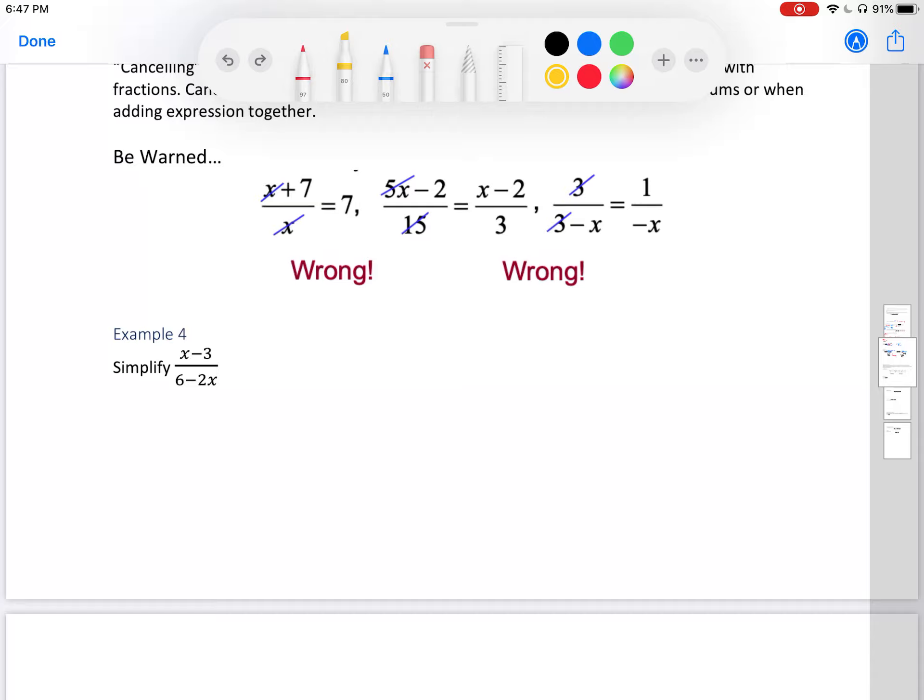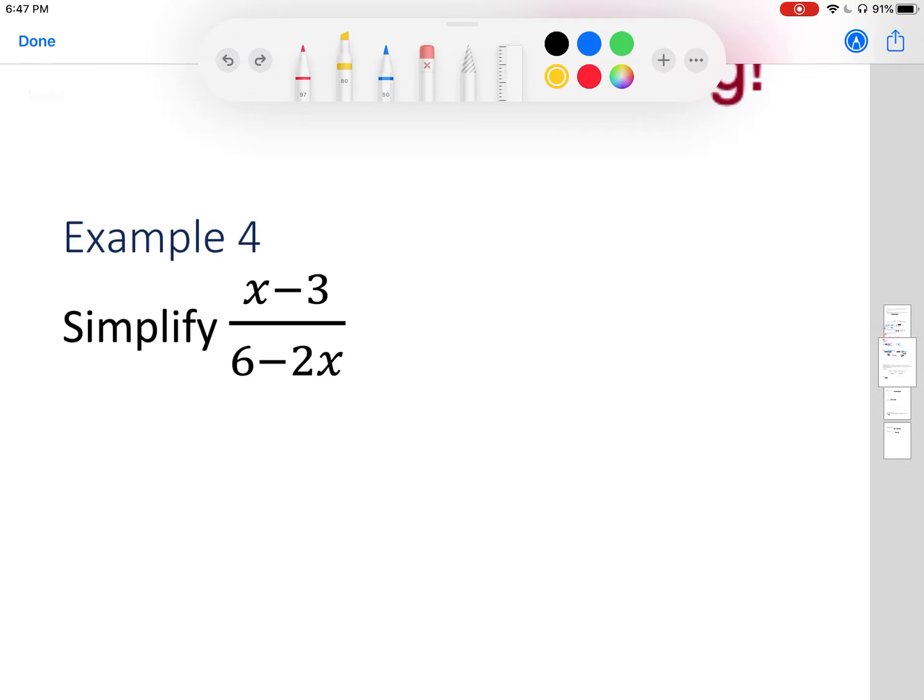So take a look here. We're asked to simplify x minus 3 and 6 minus 2x. Well, often when we see these questions, I always think, okay, I don't know where to start. But I know my guiding rule is to first factor completely. So let's try and factor. In my numerator, I see that I can't do anything with that x minus 3. But in my denominator, I can divide out a 2. If I divide out a 2, I'm left with 3 minus x.